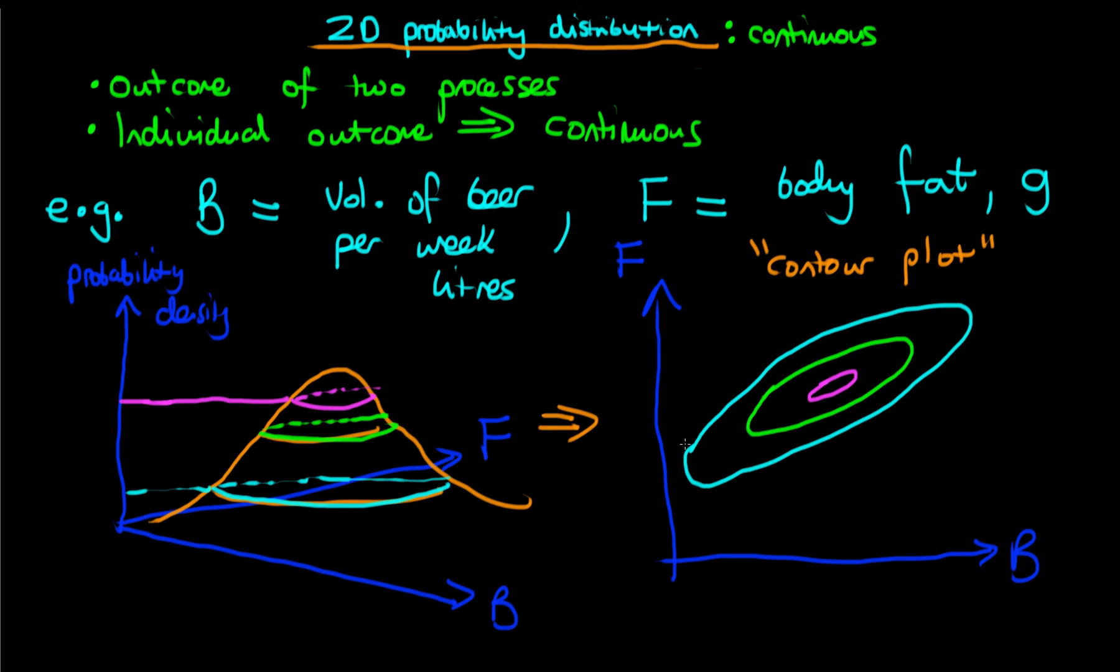Okay, so now we've covered how we visualize a two-dimensional continuous probability distribution, but what are the conditions under which that distribution is actually a valid probability distribution? Well, much like the discrete case, we require that the values of our function, which is now a function of the two random variables B and F, must be greater than or equal to zero for all potential values of B and F.